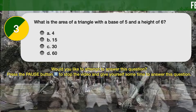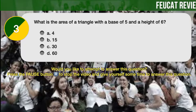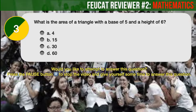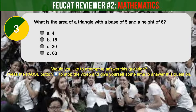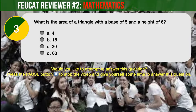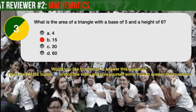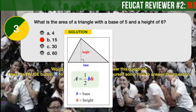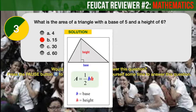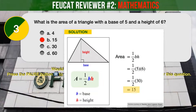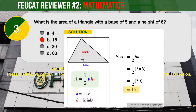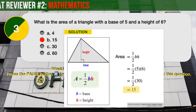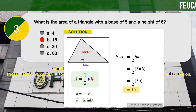Question Number 3. What is the area of a triangle with a base of 5 and a height of 6? A: 4 square units. B: 15 square units. C: 30 square units. D: 60 square units. The correct answer is B, 15 square units. The formula for the area of a triangle is 1 half times the base times the height. Substituting the given values: Area equals 1 half times 5 times 6, therefore the area is 15 square units.